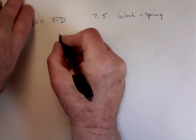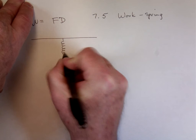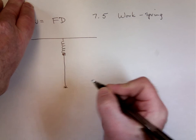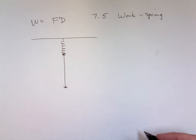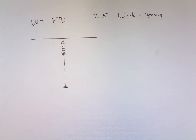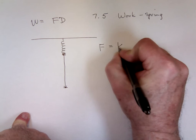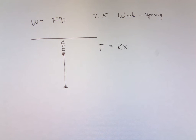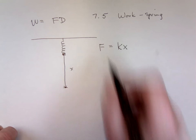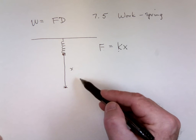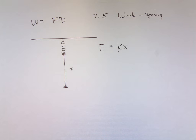Here we've got a spring. We're going to put a weight on this spring — putting a weight on it will stretch the spring a certain distance. The amount of distance it stretches depends upon the characteristics of the spring: how many coils it has, what it's made out of, how thick the coils are. Hooke's Law says that the force required is proportional to the distance that it stretches the spring. The more it stretches, the more force that's required.